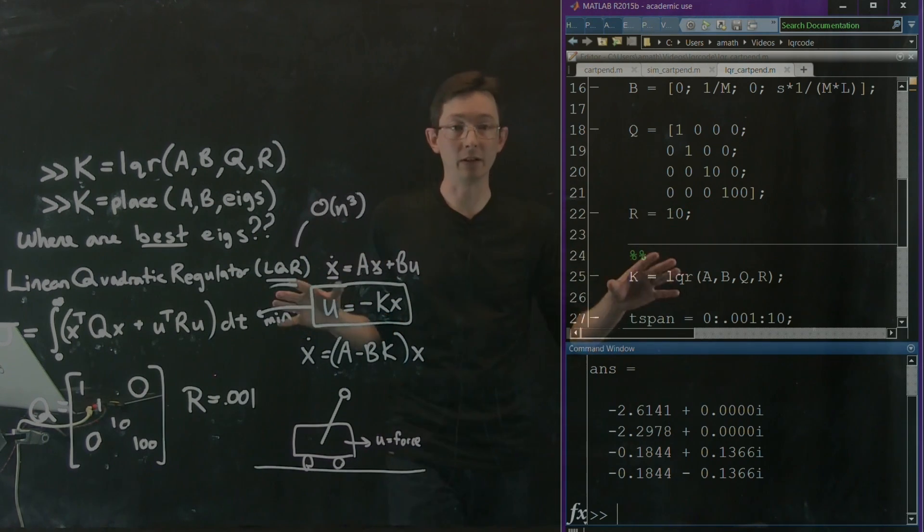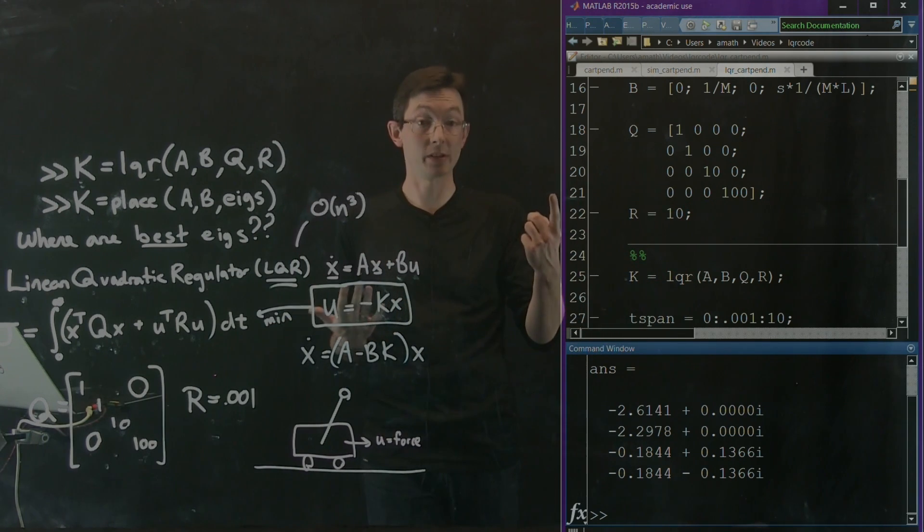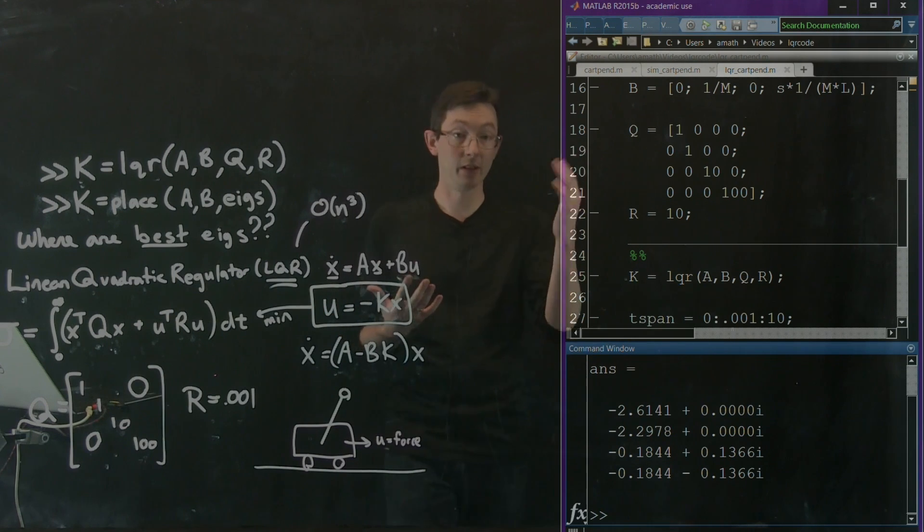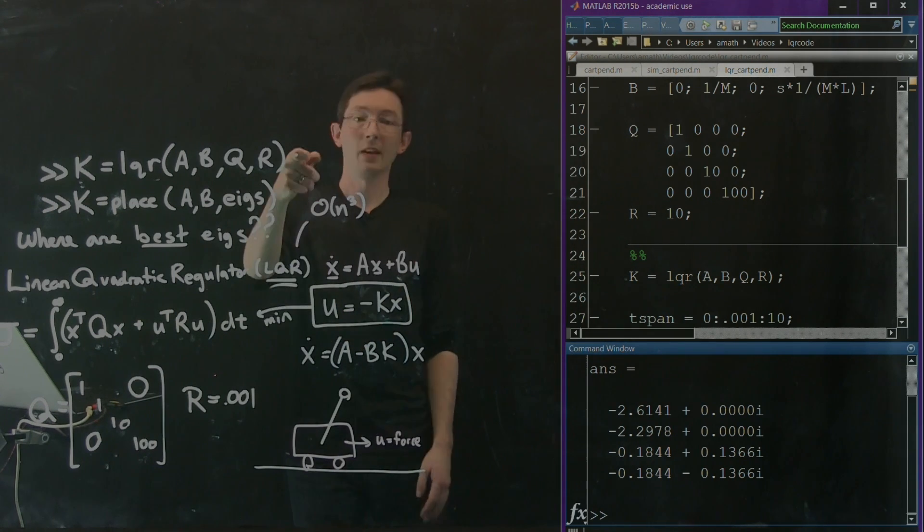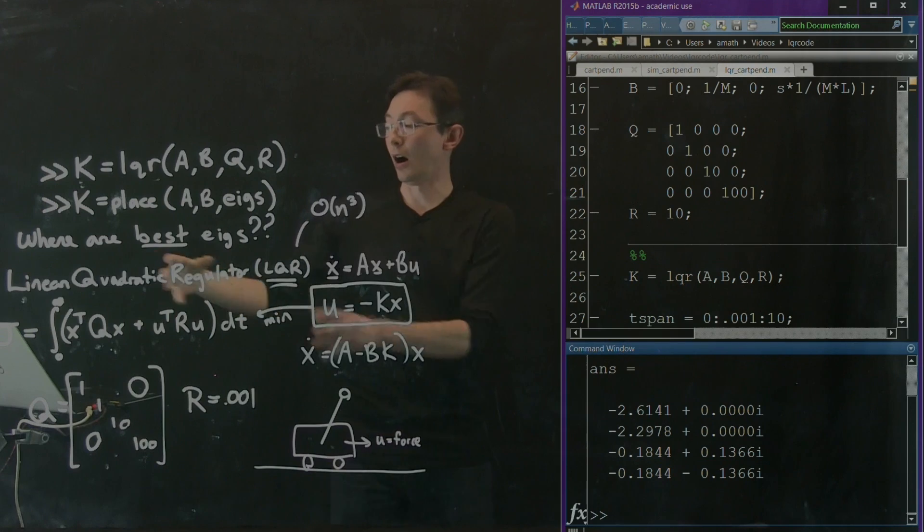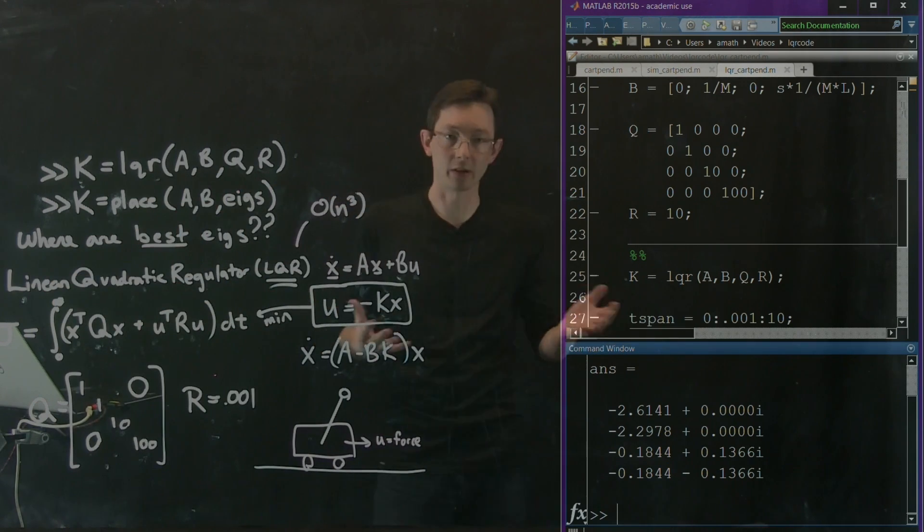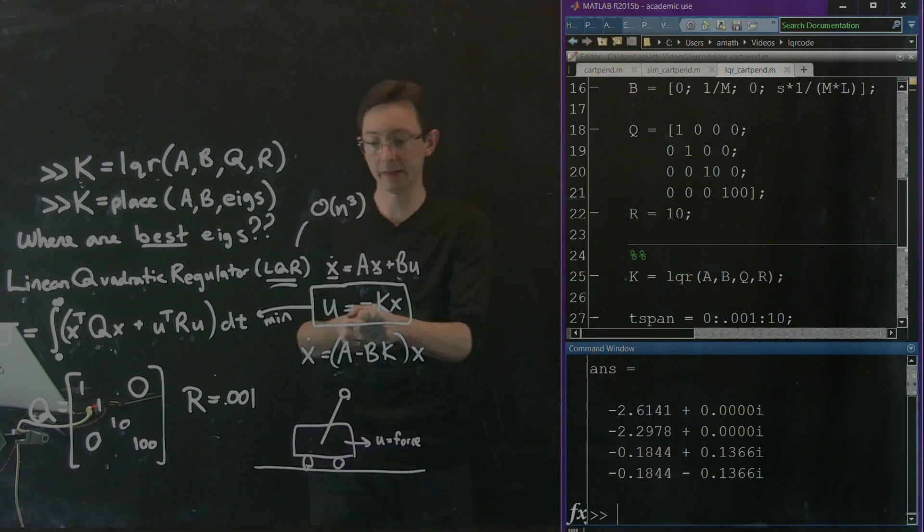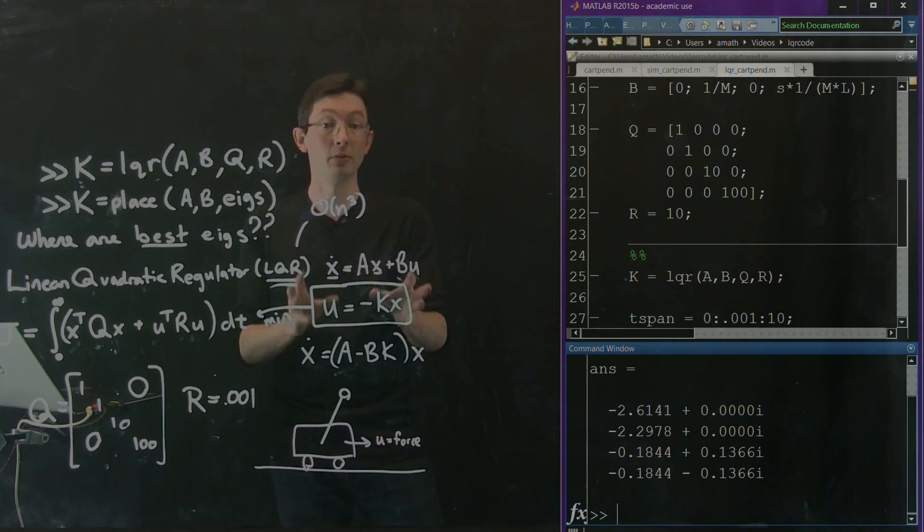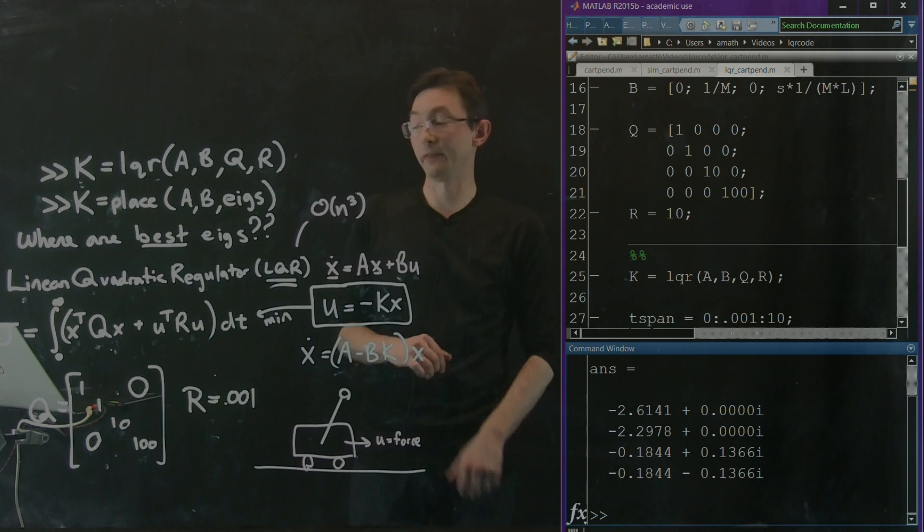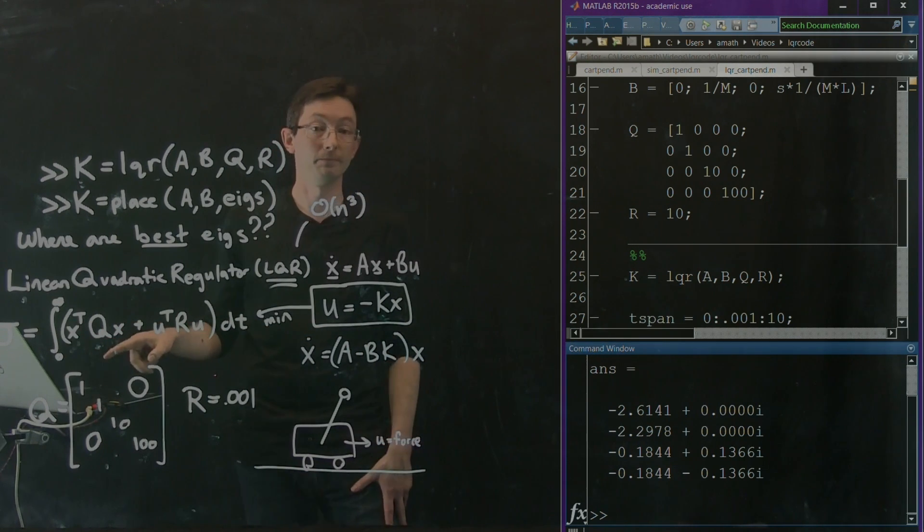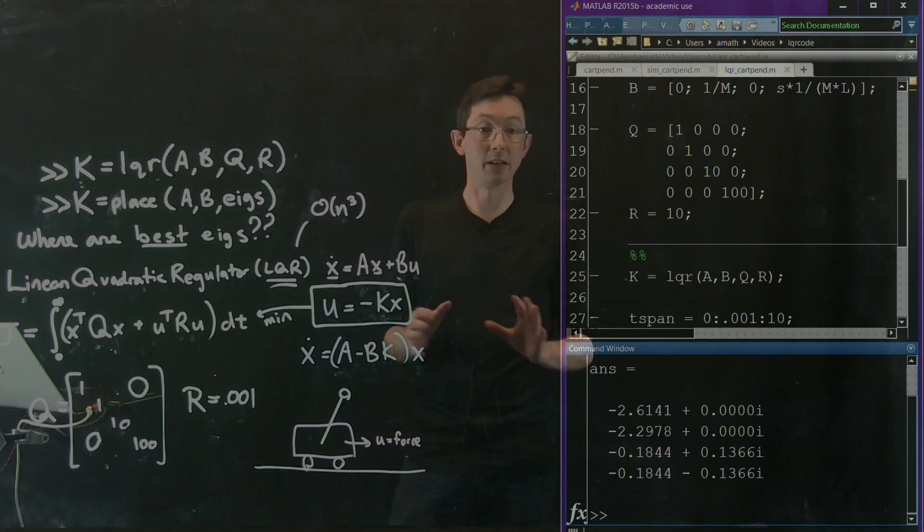So that's the mile high overview of LQR. We can see that it actually works on a real nonlinear system, this inverted pendulum on a cart, very simple to design, optimal in some cost function. I didn't tell you how to derive it, but you can look that up in a book or on the internet, but it really is optimal linear full state feedback control with respect to this quadratic cost function. Thank you.